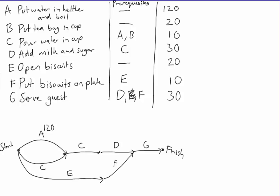So I can then put that information onto my network as well. That takes 2 minutes. C takes 10. E takes 20. 10, 20, 10, and 30.